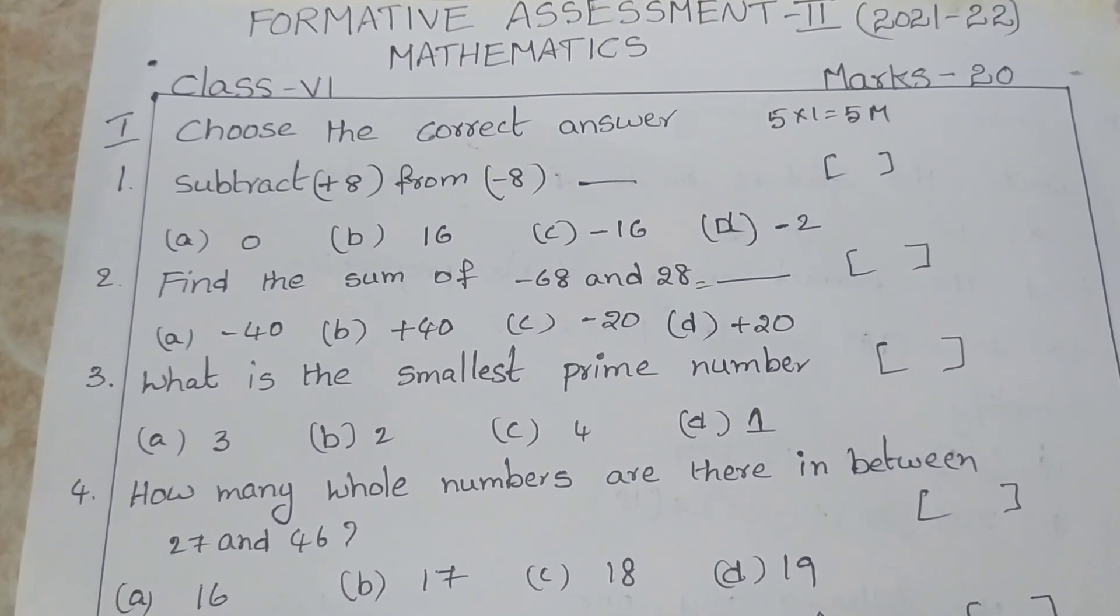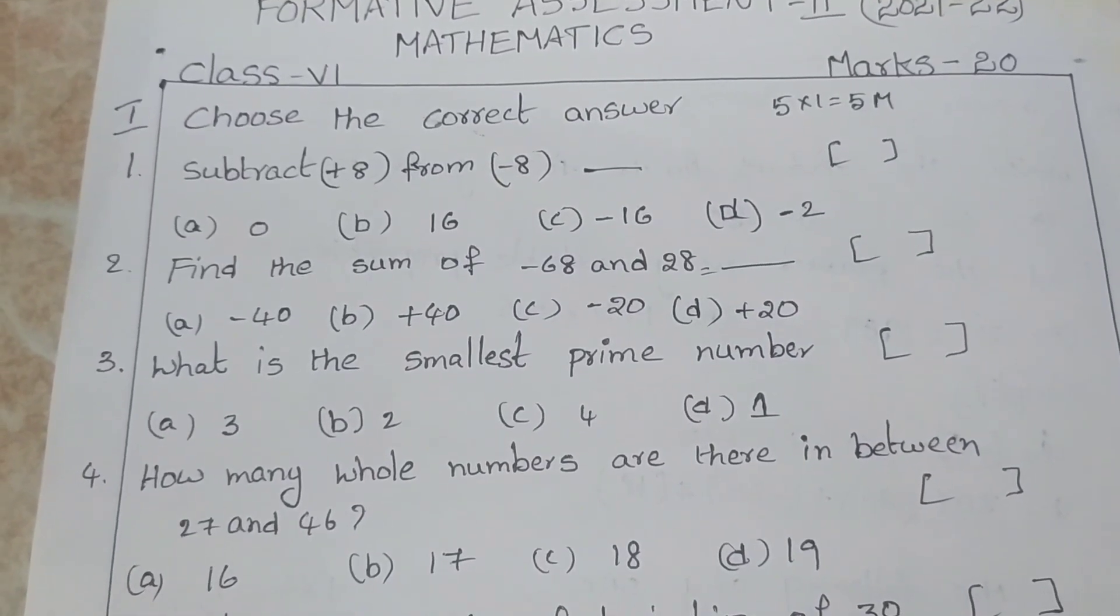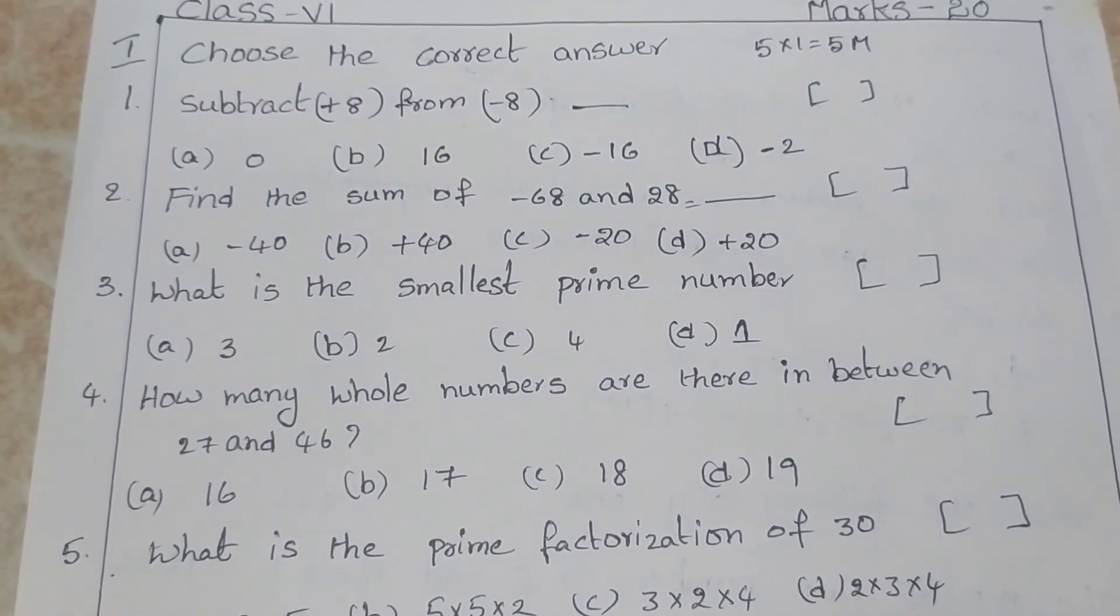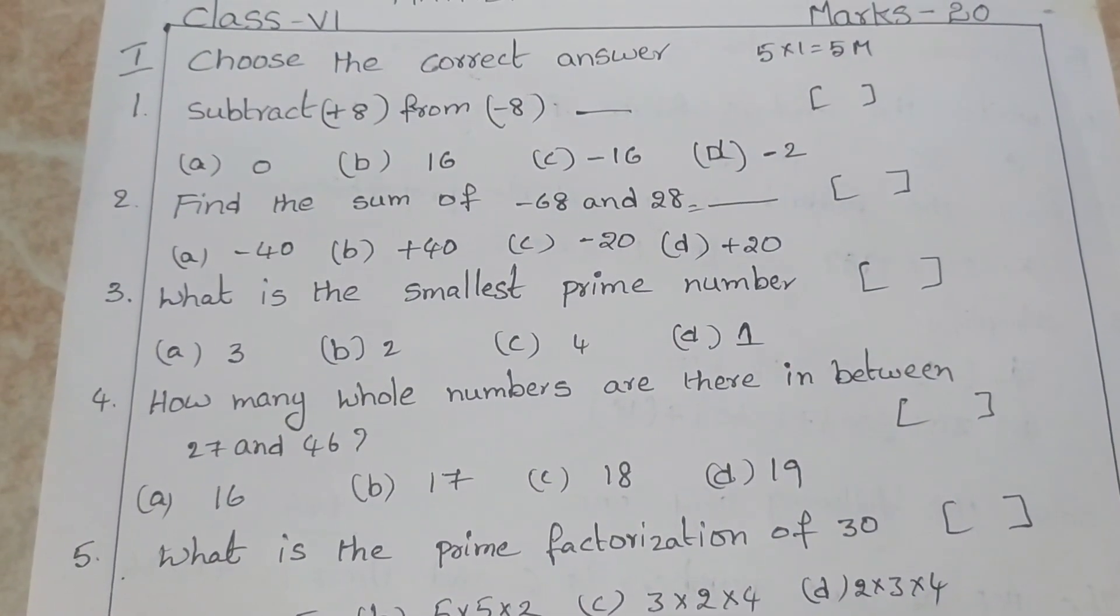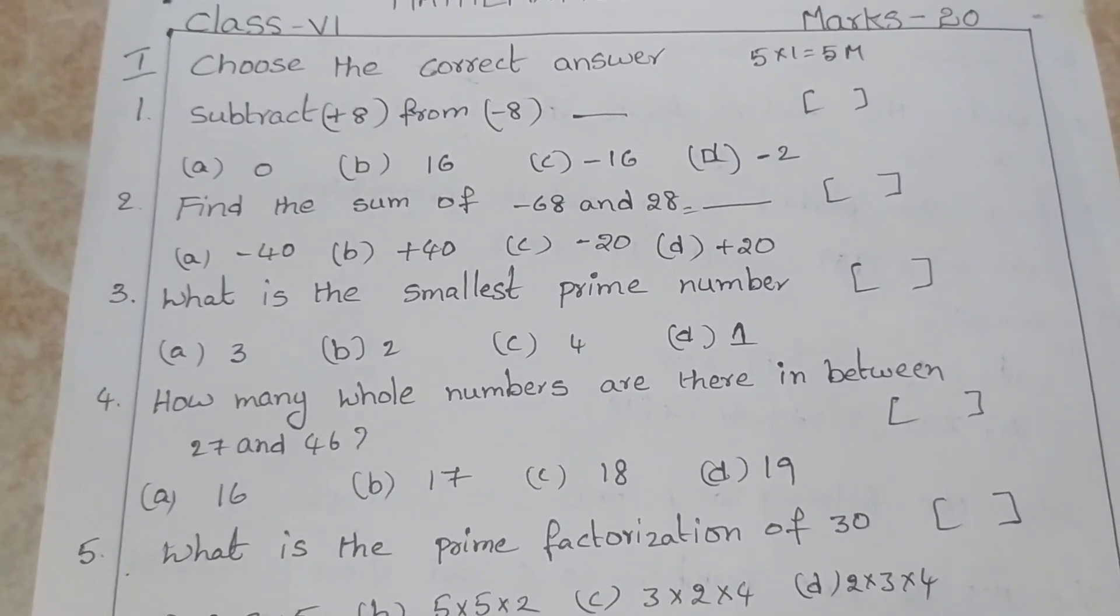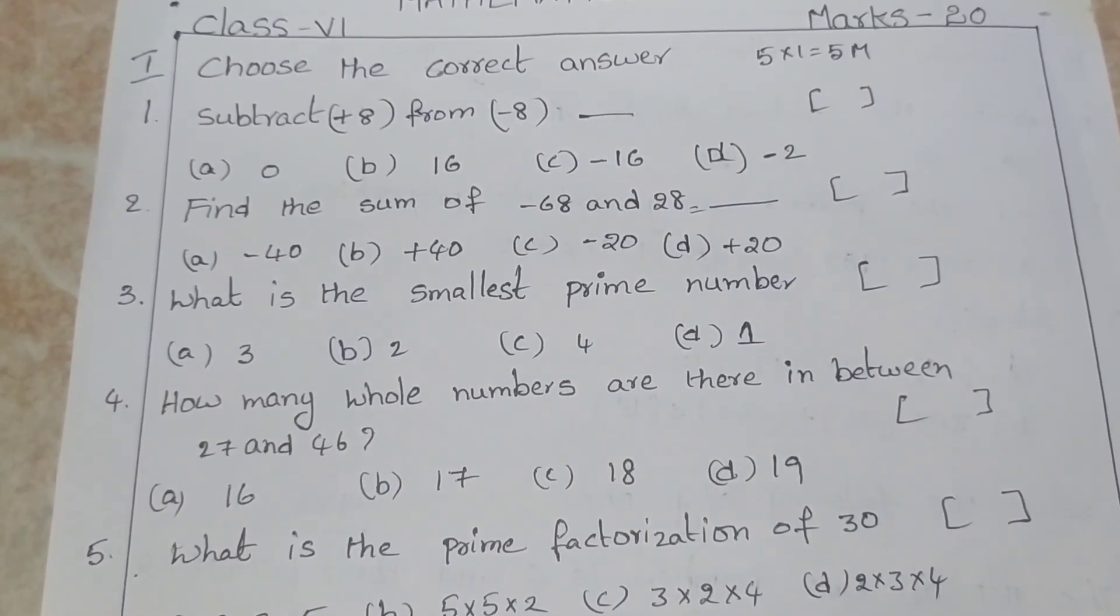First roman, choose the correct answer. Subtract +8 from -8. Options: 0, 16, -16, -2. Find the sum of -68 and 28 is equal to: -40, +40, -20, +20.